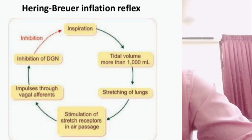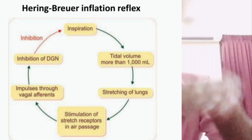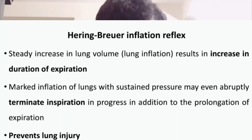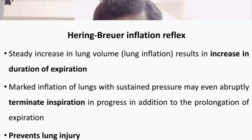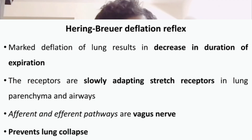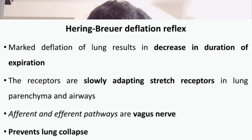Tidal volume can increase up to 1500 ml from 500 ml depending on body weight (approximately 6–8 ml/kg). Hyperinflation can cause lung injury. The Hering-Breuer inflation reflex prevents this. Conversely, the Hering-Breuer deflation reflex prevents lung collapse during prolonged expiration by reducing expiration and increasing inspiration.